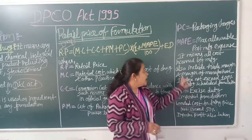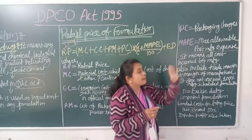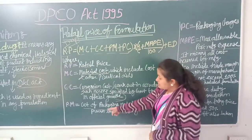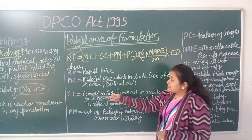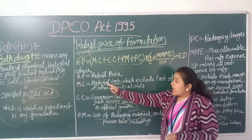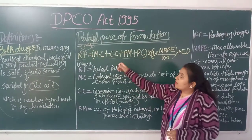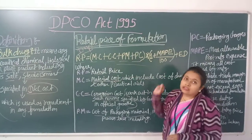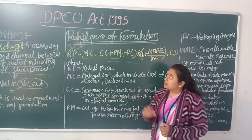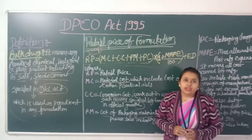To summarize: ED is 50%, MAP is 100%, PC means packaging charges, PM means cost of packaging material, CC means conversion cost, and MC means material cost. You need to learn and keep this formula. Today we saw the calculation of retail price. Thank you.